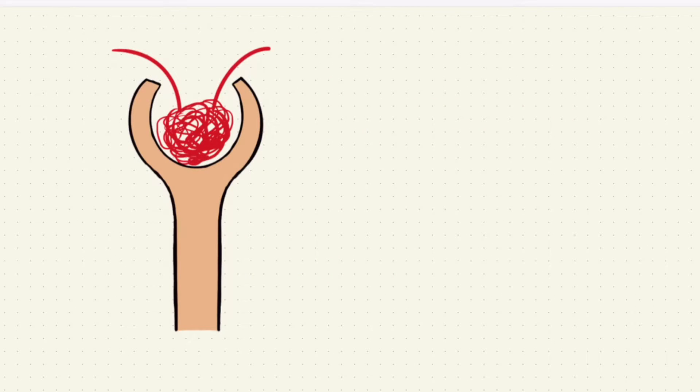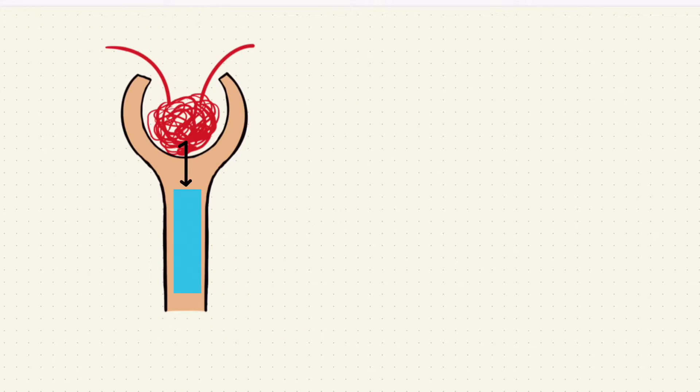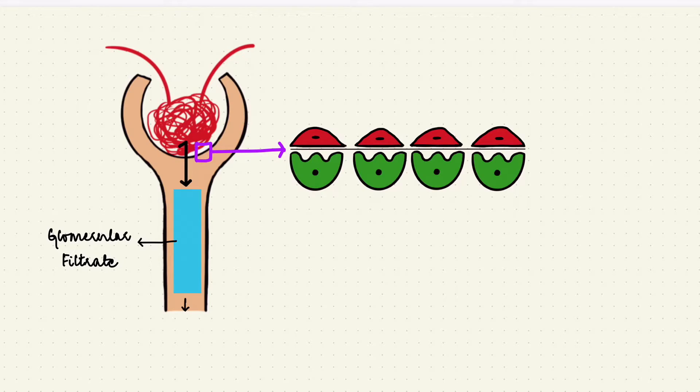The blood entering the glomerulus gets filtered. That produces glomerular filtrate which then goes through the rest of the nephron. So let's magnify the filter a little. The glomerulus is a set of capillaries so it has an endothelial layer and a basement membrane. The endothelial cells are fenestrated so they have spaces.